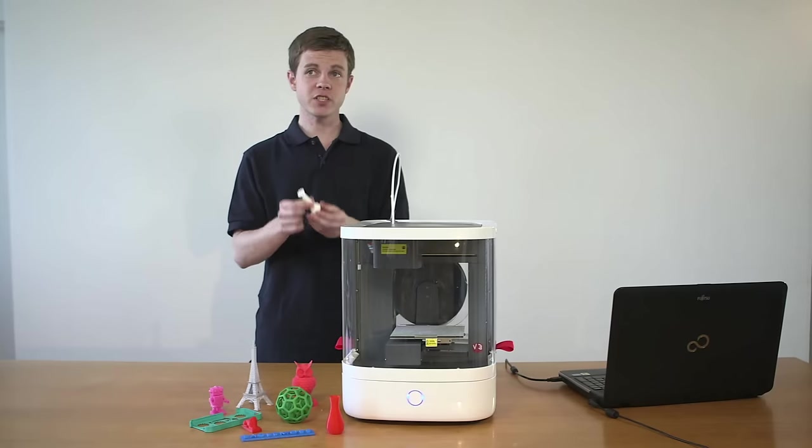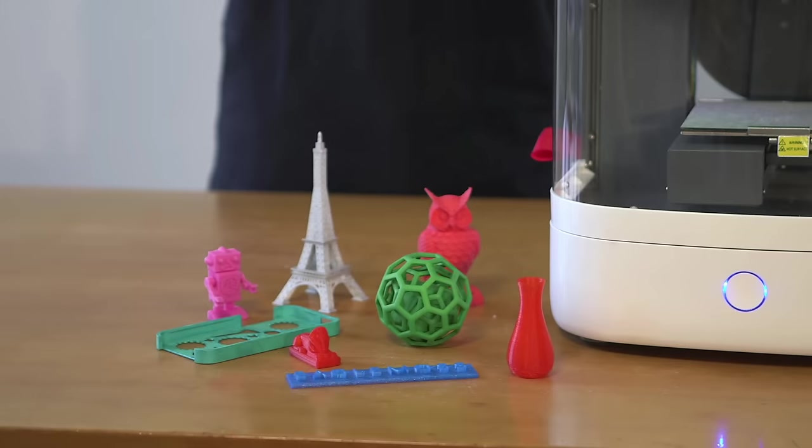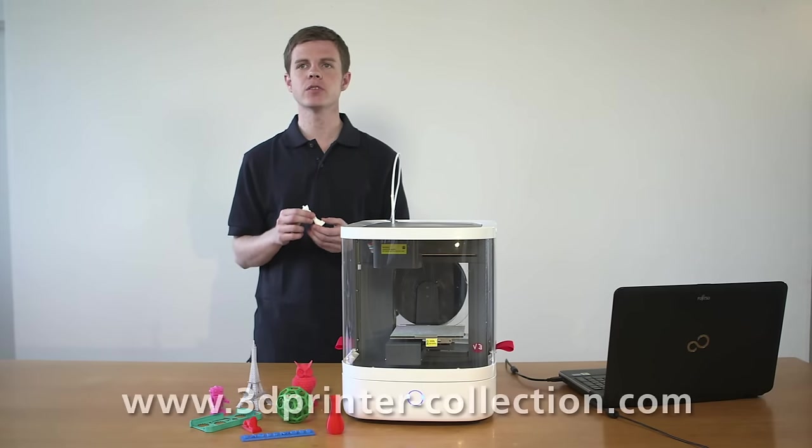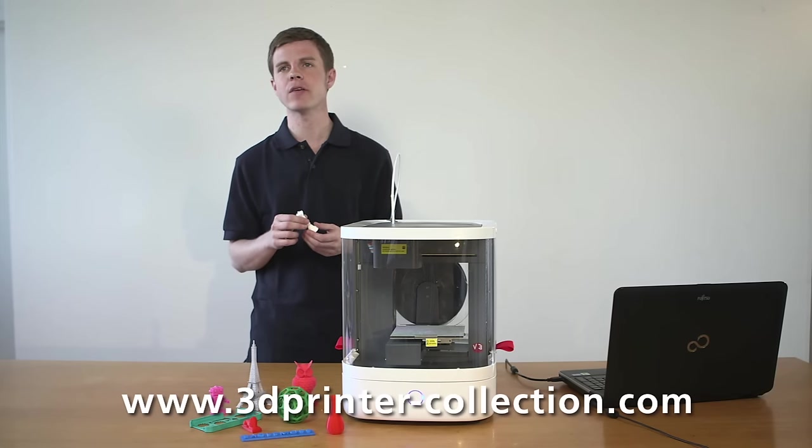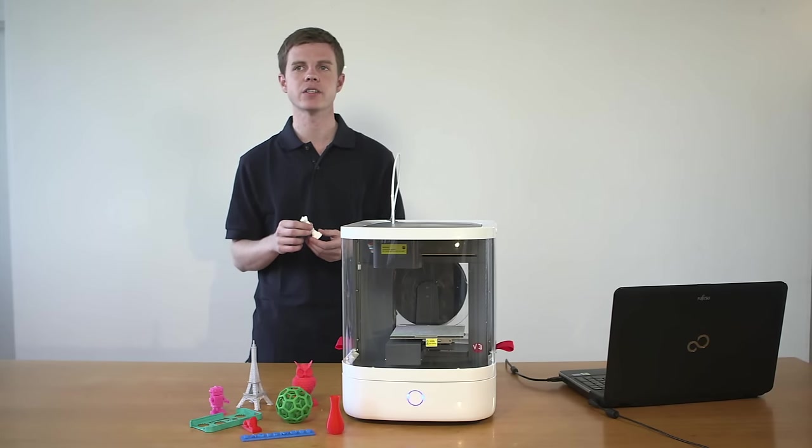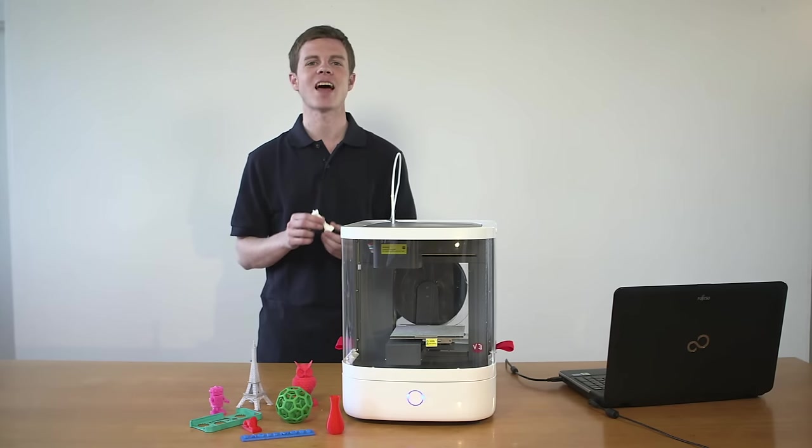Once you've printed your first object on your Vector3, the sky's the limit. There are literally no end of files available online for you to try and don't forget to visit our website www.3dprinter-collection.com for your free set of 25 exclusive designs, the codes for which are found in the quick start guide. If you have any queries or problems, check out the full manual which is also available at our website. Thanks for watching and happy printing!